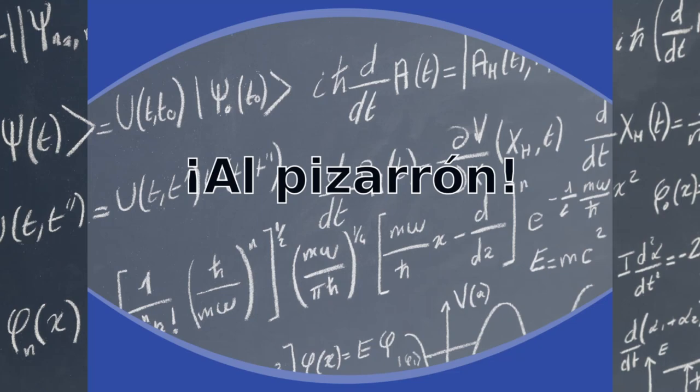Vamos a seguir hablando un poquito sobre procesos de Poisson y yo creo que sí nos da tiempo de empezar a hablar sobre movimiento browniano, pero no estoy completamente seguro. Vámonos rápidamente al pizarrón y continuamos a ver hasta dónde podemos llegar. Entonces vamos a empezar con este resultado.